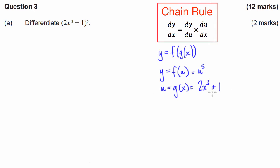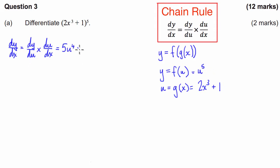So let's get to doing that. The chain rule — dy/dx — is going to be dy/du, which is 5u to the power of 4, multiplied by du/dx, the derivative of the substitution variable with respect to x. Bringing the 3 down: 3 times 2 is 6, so we get 6x squared.